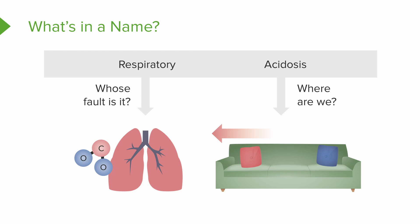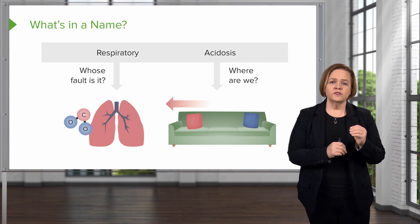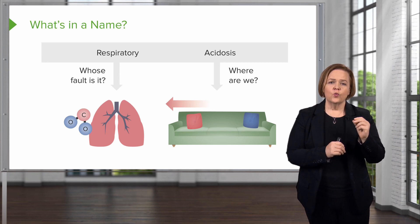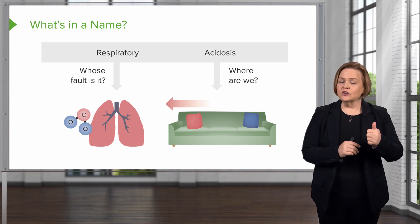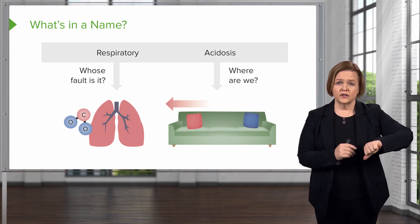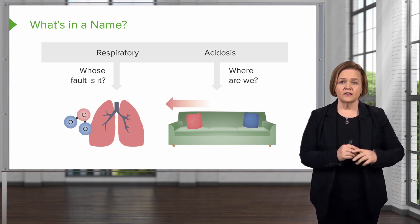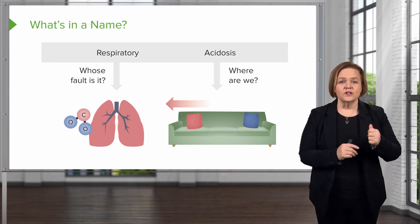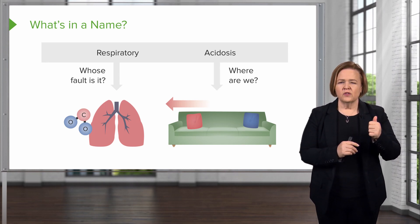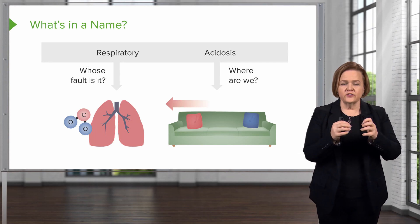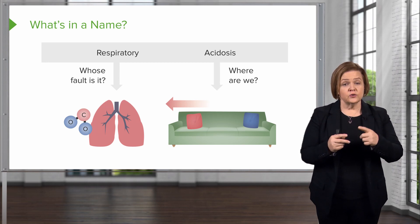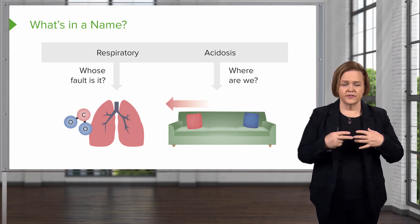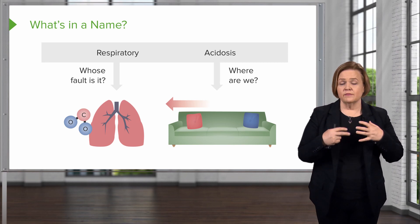For those of you already racing ahead, here's a question to see if you understand: if it's the lungs' fault that we're in acidosis, what do the lungs control? CO2 levels. So would it take a higher CO2 level or a lower CO2 level to become more acidotic? It would take a higher CO2 level. That would mean my lungs are not breathing sufficiently enough — in order for CO2 to build up, I'm not hyperventilating. For some reason, I'm not breathing effectively.